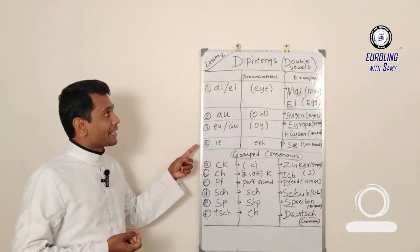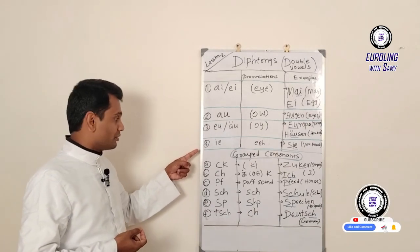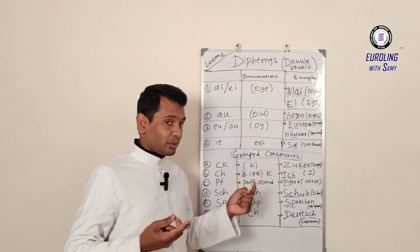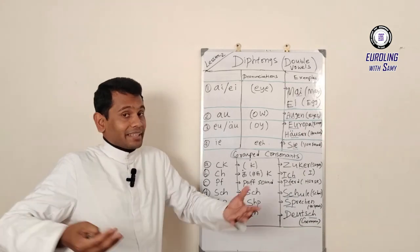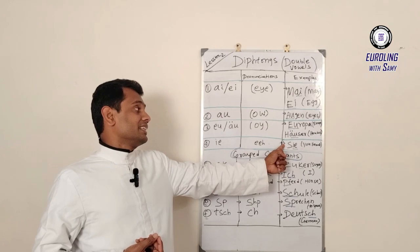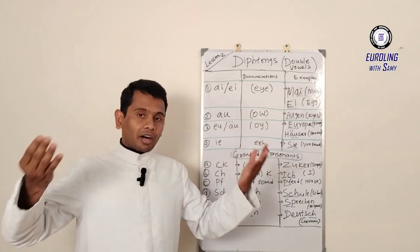The fourth type of diphthongs with the double vowels is I-E. That is IE. It is pronounced as E. For example, SIE. SIE, that means you, formal type.